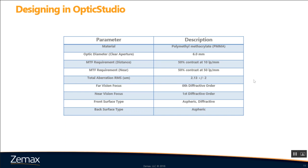And before we jump into designing this, we'll just show the parameters that we're going to try to meet with our design. Again, our material is going to be PMMA. We're going to set that optic diameter, or our clear aperture, to be 6mm, which is a common diameter that is used in a lot of IOL designs. We're going to have an MTF requirement for both distance and near vision, 50% contrast at 10 line pairs per millimeter and 50 line pairs per millimeter, respectively. Total aberration, RMS, we'll say that's going to be 2.13 plus or minus 2 microns. And the far vision focus is going to correspond to the zero diffractive order, and the near vision focus is going to correspond to the first diffractive order.